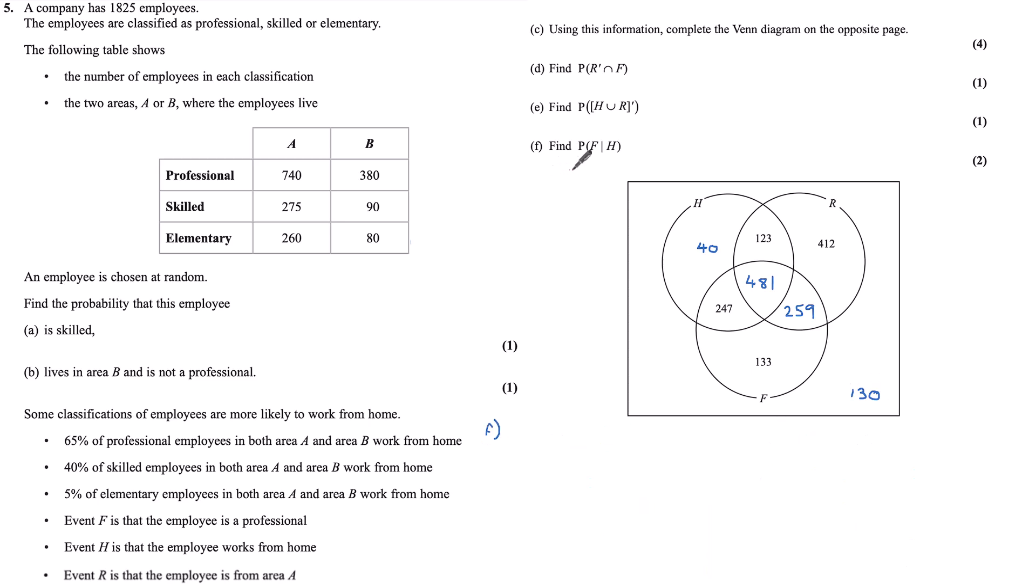Find the probability of F given H. So with the given formula, the probability of F given H is equal to the probability of F and H divided by the probability of H. So we can find the probability of F and H. That will be this 247 and 481, so 728 divided by the total number of employees, so 1,825.